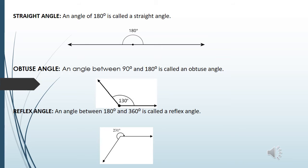Obtuse angle: an angle between 90 degrees and 180 degrees is called an obtuse angle. Look at the figure - 130 degrees.